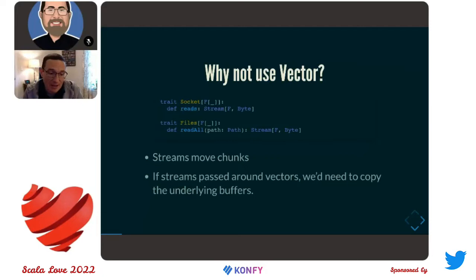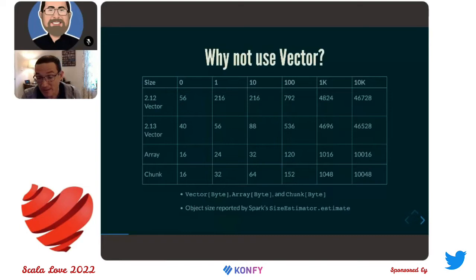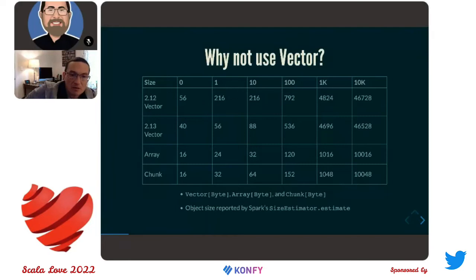Vectors are a great general purpose data structure, but especially at the time, there were some trade-offs that led us to some innovation. Those small vectors — lots and lots of tiny little vectors — ended up being rather expensive from an overall performance perspective. Using Spark's size estimator to estimate heap size of an object, from left to right we have collection sizes from empty up to 10,000 elements. The Scala 2.13 vector rewrite made a huge difference. For vectors of one element, the 2.12 vector was taking 216 bytes of heap, whereas the 2.13 vector is roughly a fourth of that.